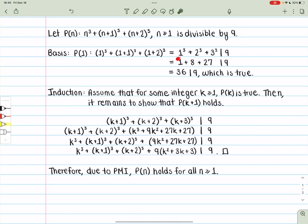Well let's simplify. We got 1 + 8 + 27 which is 36. Yes, 36 is 9 times 4, so yes it is divisible by 9, which is true. So our basis is true.